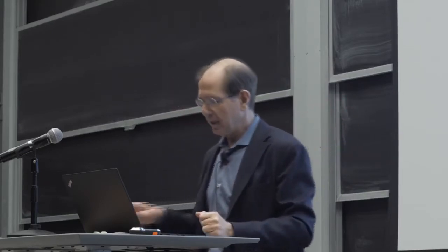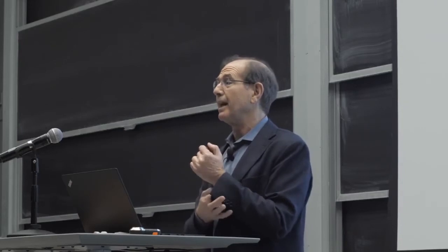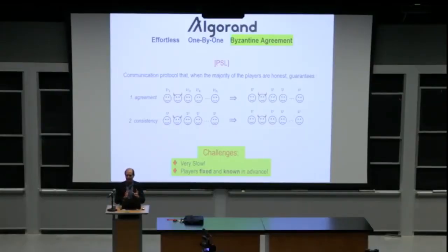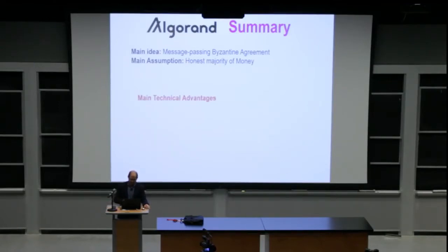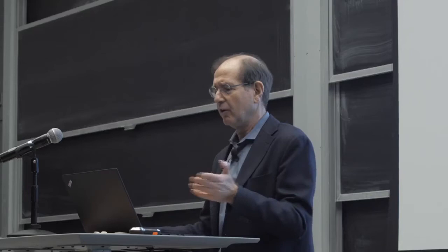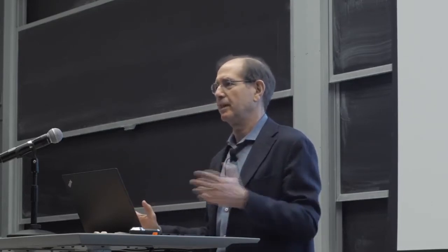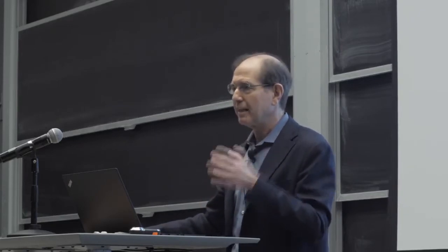The challenges with traditional Byzantine agreement protocols are that they are very slow and only apply when the number of players is fixed in advance and known — which is not true on the internet. But that is the idea Algorand wants to use. The main idea is message-passing Byzantine agreement, and the main assumption is that the majority of the money in the system is in honest hands. The first technical advantage: computation is trivial. All you need to do is compare integers, sign a message, verify a digital signature — nothing to write home about. Computation is trivial.